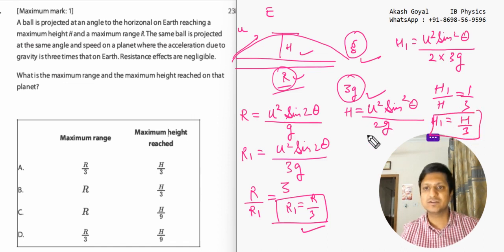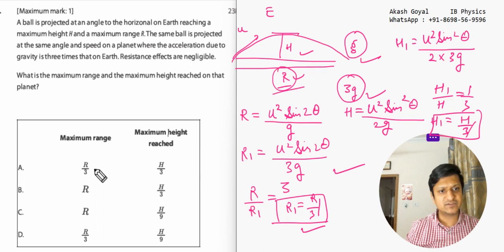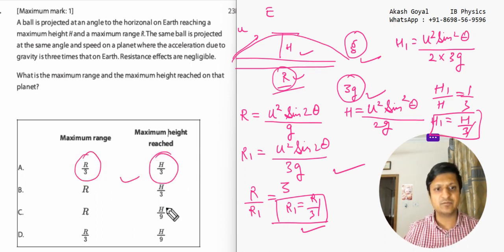So in both answers, r by 3 and h by 3 will be the answer. In our options, it is r by 3 and h by 3. So A will be the answer.